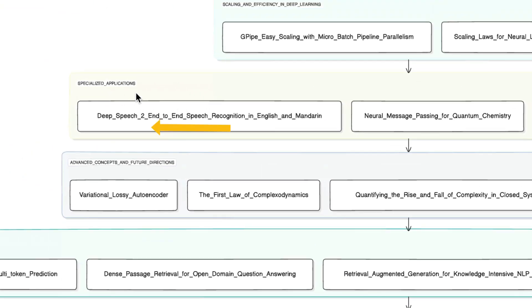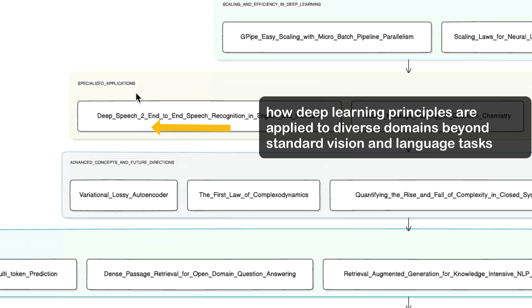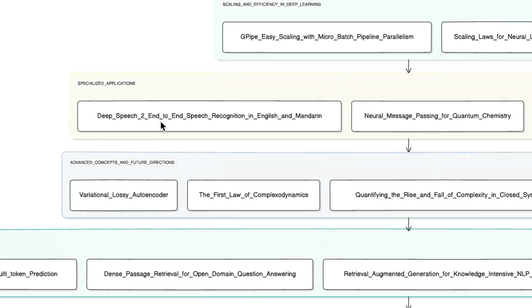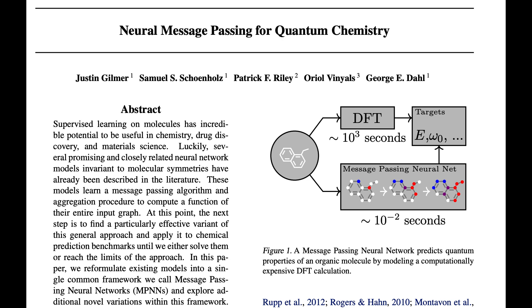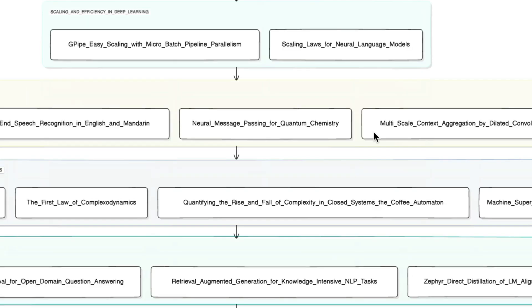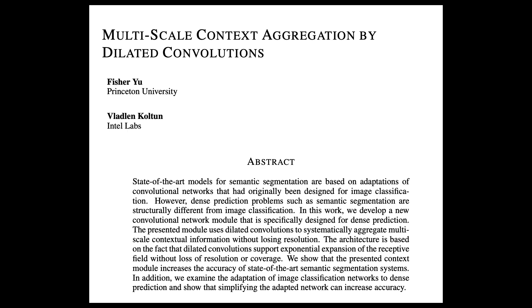The next category is Specialized Applications, where you see how deep learning principles are applied to diverse domains beyond standard vision and language tasks. This includes 'Deep Speech 2' for end-to-end deep learning for speech recognition, 'Neural Message Passing for Quantum Chemistry' to learn how graph neural networks apply to molecular property prediction, and 'Multi-Scale Context Aggregation by Dilated Convolutions,' exploring techniques for dense prediction tasks like semantic segmentation.